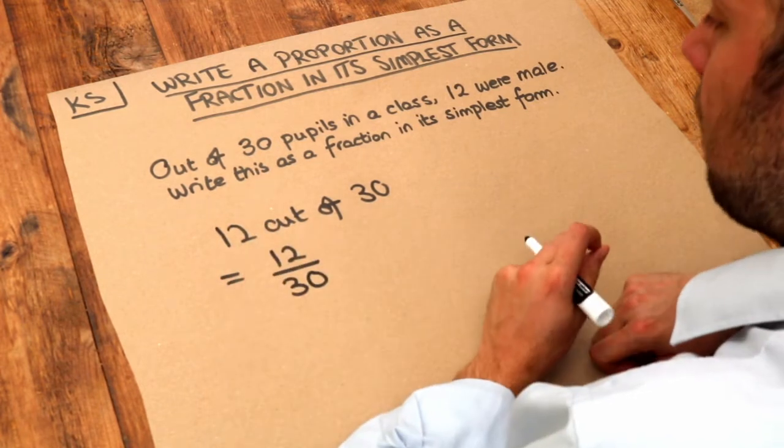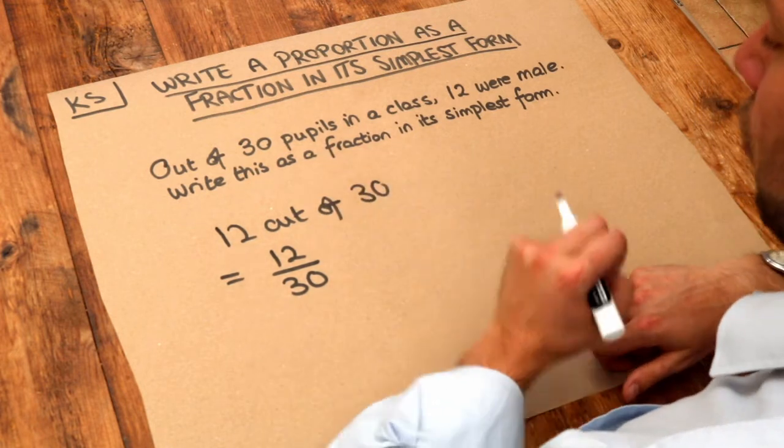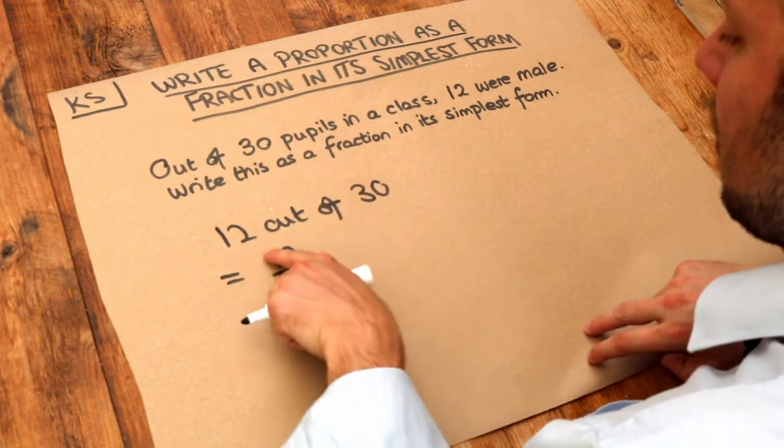So 12 thirtieths of the class were male. And then we can use our knowledge about equivalent fractions to simplify this.